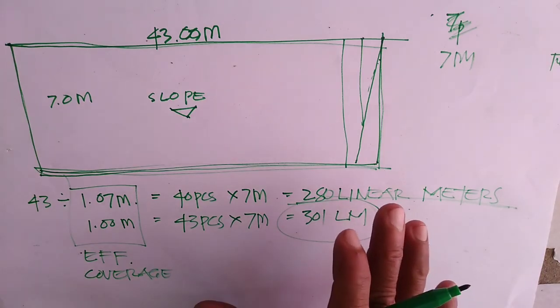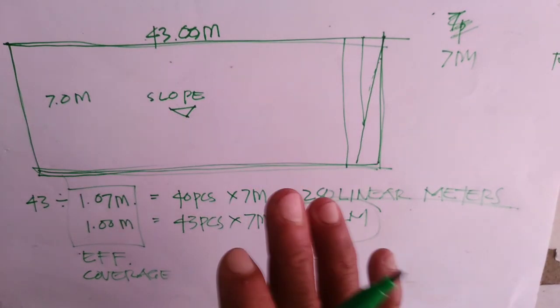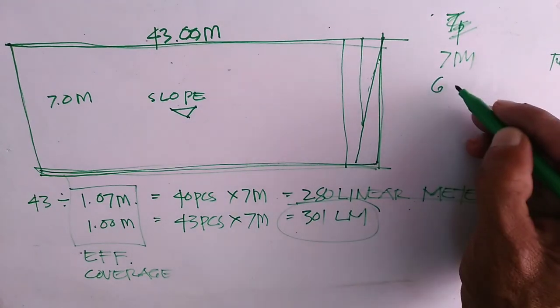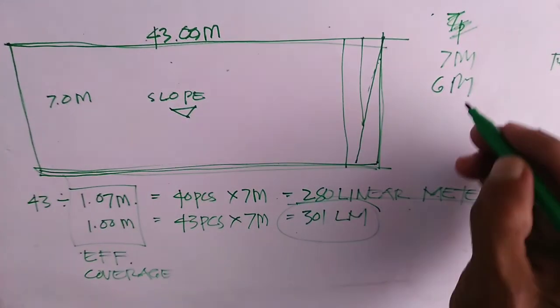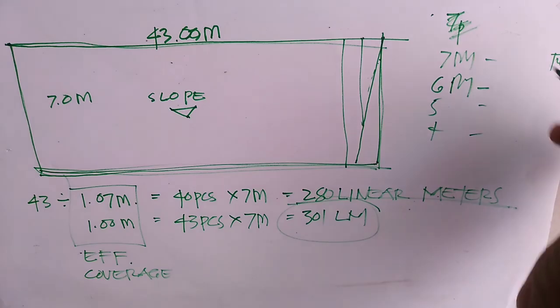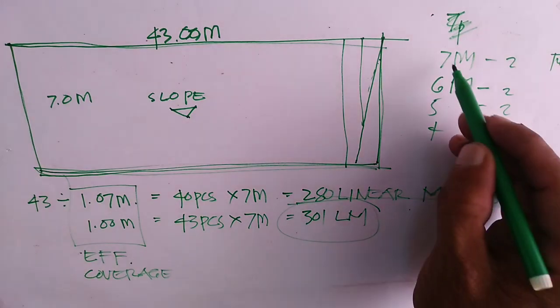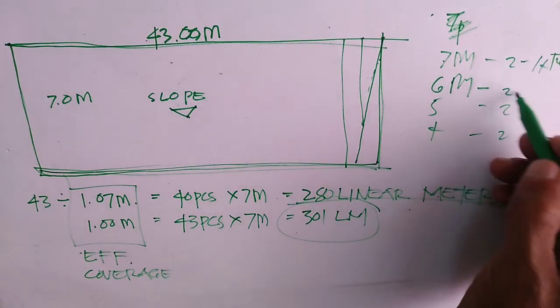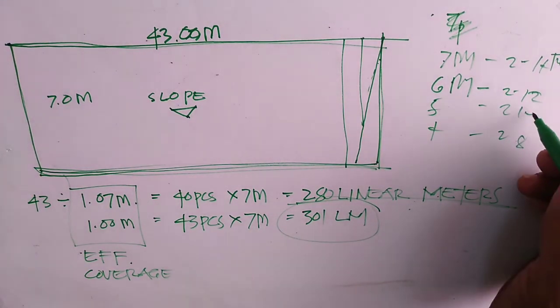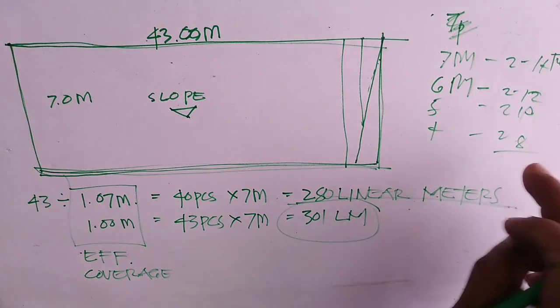Pagka yung roofing nyo, yung itsura ng roofing nyo, halimbawa, 4 aguas, iba-iba din po yung pagkuha nya. So, pag 4 aguas, meron yung mahaba, halimbawa, 7 meters, meron yung kasunod na 6 meters, 5, 4, so, ito total nyo lang po kung ilan yung mga kailangan nya. Halimbawa, ito, 2, 2, ganyan. So, 2, 7 meters, 14, 2, 6, 12, tapos, 2, 10, 8. So, i-add nyo lang po yan. Yan din po yung kalalabasan na linear meters nya.